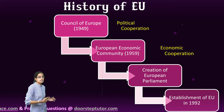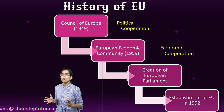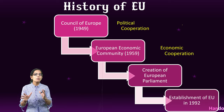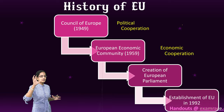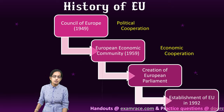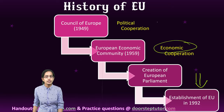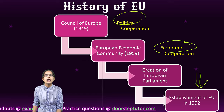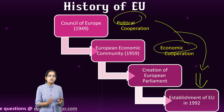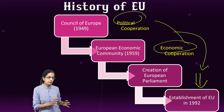Later on, the European Economic Community was built up in 1959, and this was an economic cooperation. There was the creation of the European Parliament, and finally the establishment of the European Union. This establishment of the European Union was a summation of economic cooperation as well as political cooperation together, leading to both political and economic cooperation.